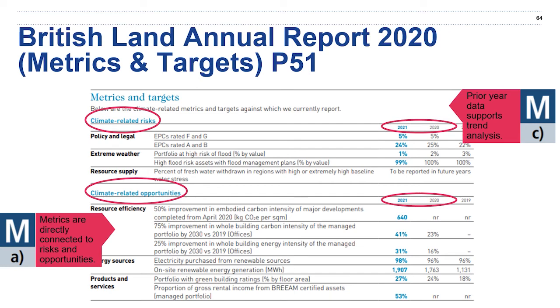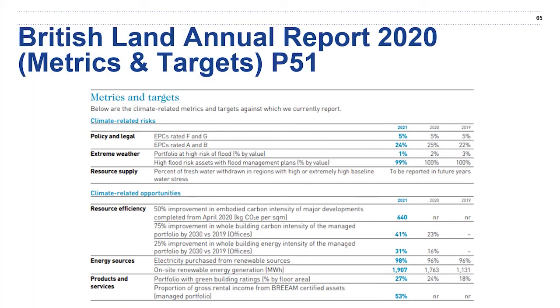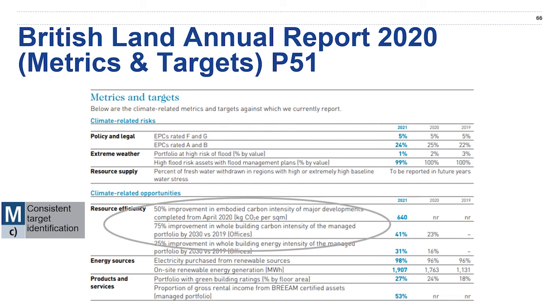Something that might be missing is that even though they give a trend line, the targets aren't there for every metric. It can be really important for investors to know where you're aiming for, not just where you're coming from. They did provide some targets — for example in their resource efficiency — but it can be helpful to provide targets for all of your metrics so that investors know where you're heading towards.